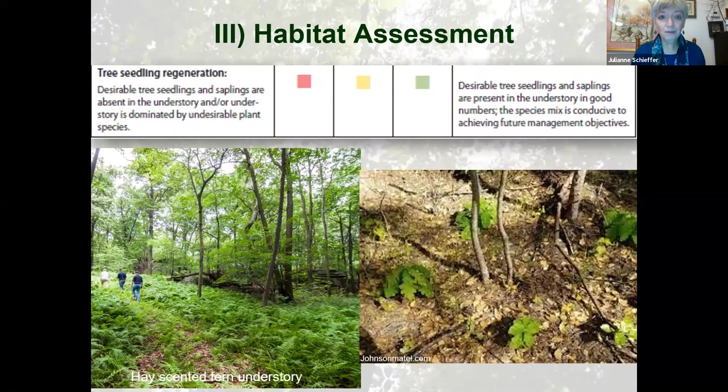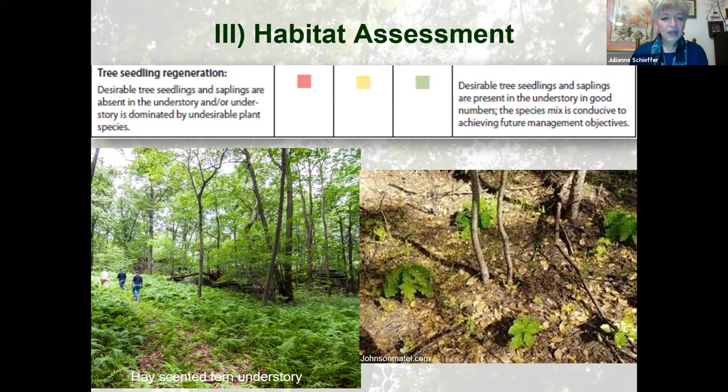Our last item under habitat assessment is tree seedling regeneration. On the left is hay-scented fern — because of the allelopathy from this plant, nothing can get through. On the right we see some oak coming through. The healthiest forests are going to have some desirable tree seedlings and saplings. Again, that mix of ages — at least you have the next generation coming through.